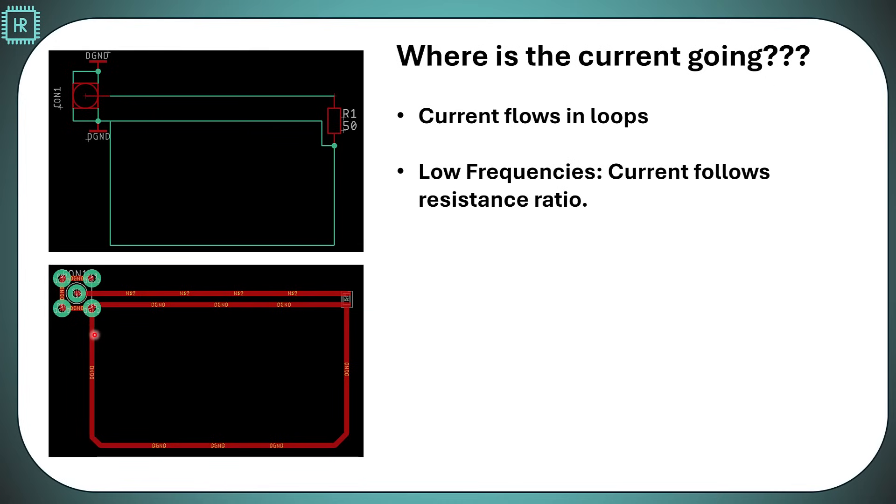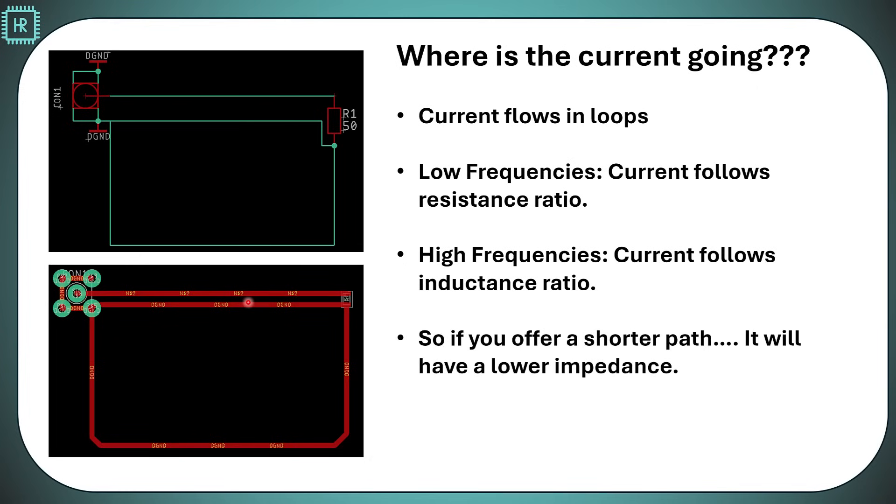When you go to high frequencies, something different is going to happen. Then the inductance starts to become dominant. How do you calculate inductance or get an idea of it? It's basically the size of the loop. If the current follows this forward path and this return path, you can see it's a very small loop compared to this path. What you will notice is that at high frequency, most of the current is going to run through this line. The rule of thumb here is if you offer a shorter path, it will have a lower impedance for all frequencies.